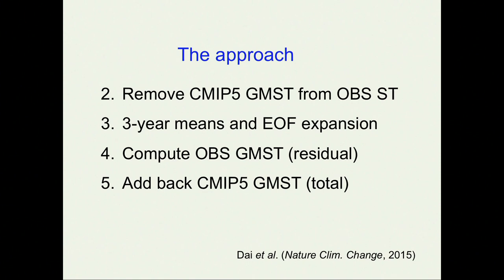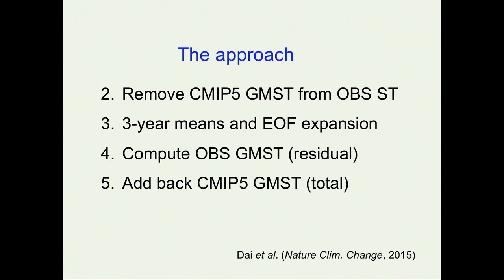That leaves us with the observations absent any external forced signal. This can't be identically true, but we argue — and this is really the crux of the paper — in several different ways, including using a large initial condition ensemble, that this seems to work very well. The next step is to apply a three-year running mean across this observational data set and perform an EOF decomposition, retaining only a minimum number of EOFs, which are the spatial structures we're interested in.